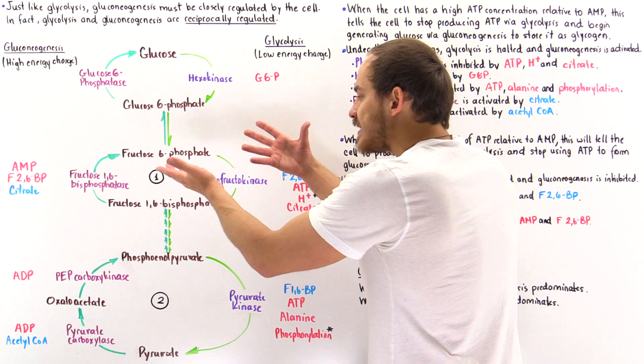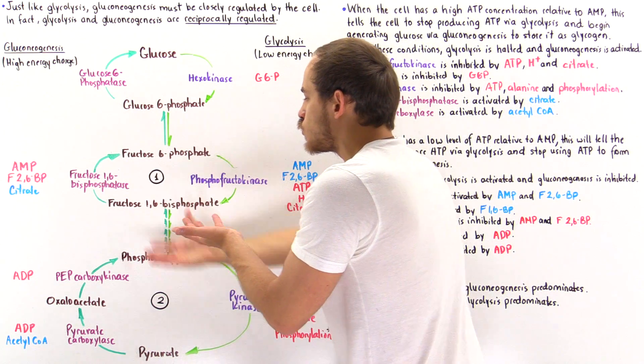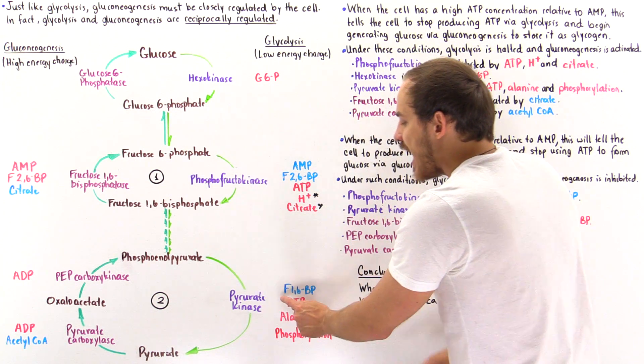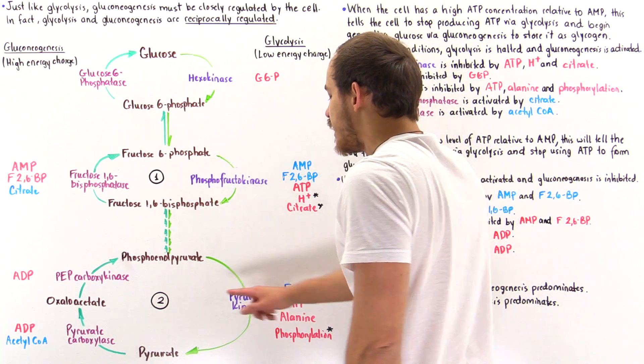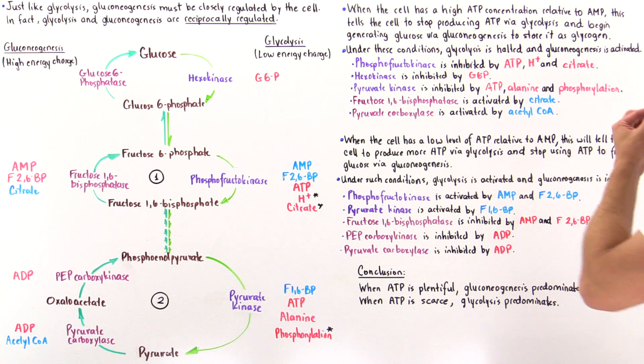And so to make sure we don't have a continual buildup of fructose 1,6-bisphosphate, it creates a positive feedback loop where the F1,6-bisphosphate molecule actually activates pyruvate kinase, and that activates the process of glycolysis.